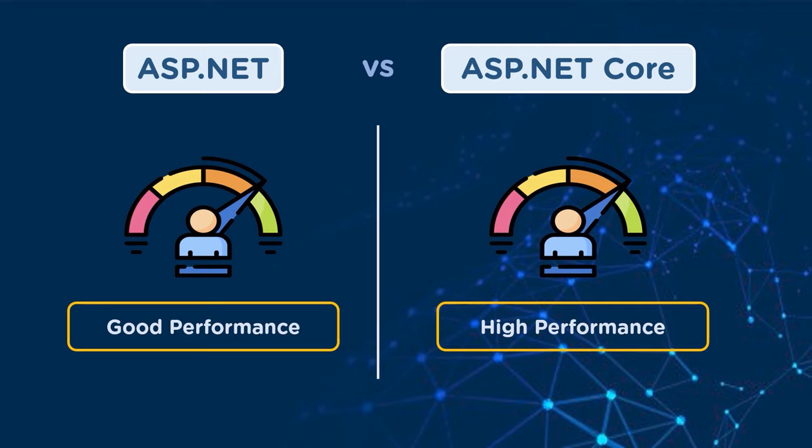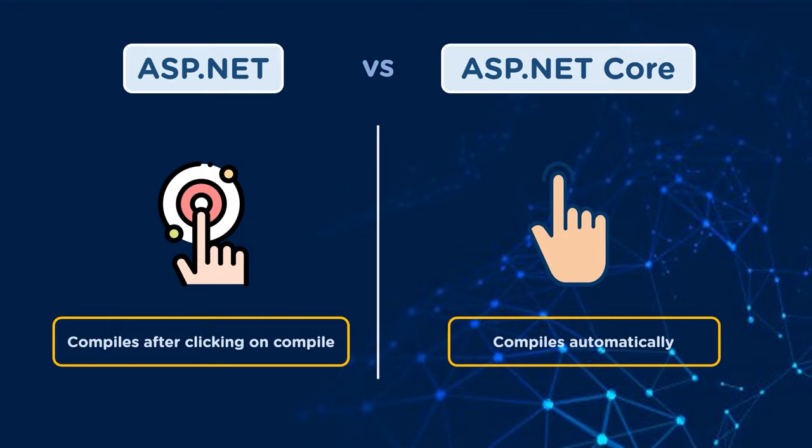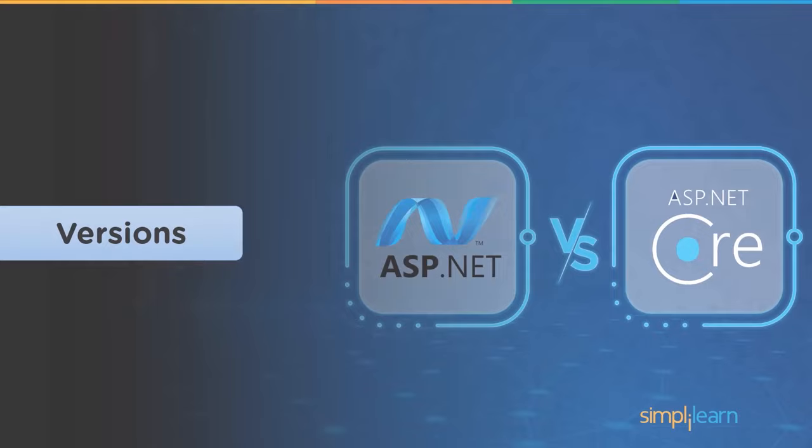The performance of applications using ASP.NET technology is good, whereas ASP.NET Core applications have higher and better performance. If the user makes any changes to ASP.NET, the user has to compile every time changes are made, but in ASP.NET Core there is no need to compile every time — it automatically compiles.